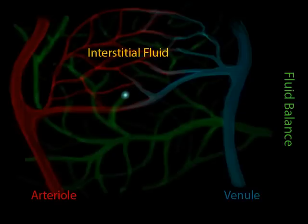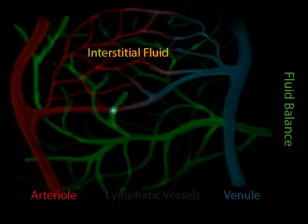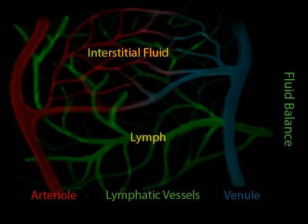About 90% of this fluid will diffuse back into the capillaries because of the difference in concentrations of the fluid. However, about 10% of the fluid will enter the open-ended lymph vessels. Once the fluid has entered the lymph vessels, it is now called lymph. These vessels eventually deliver the lymph to locations where it can be cleansed of debris and checked for the presence of pathogenic organisms.